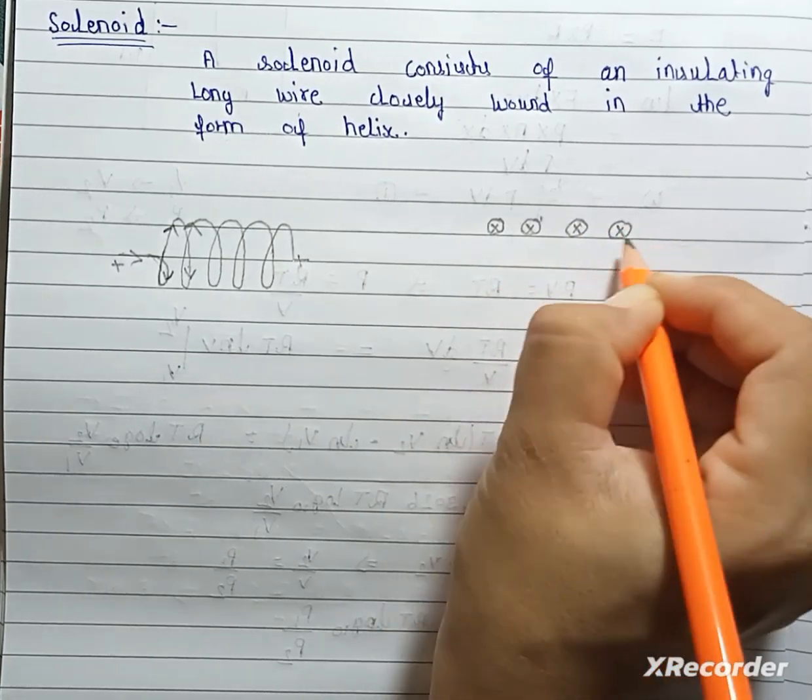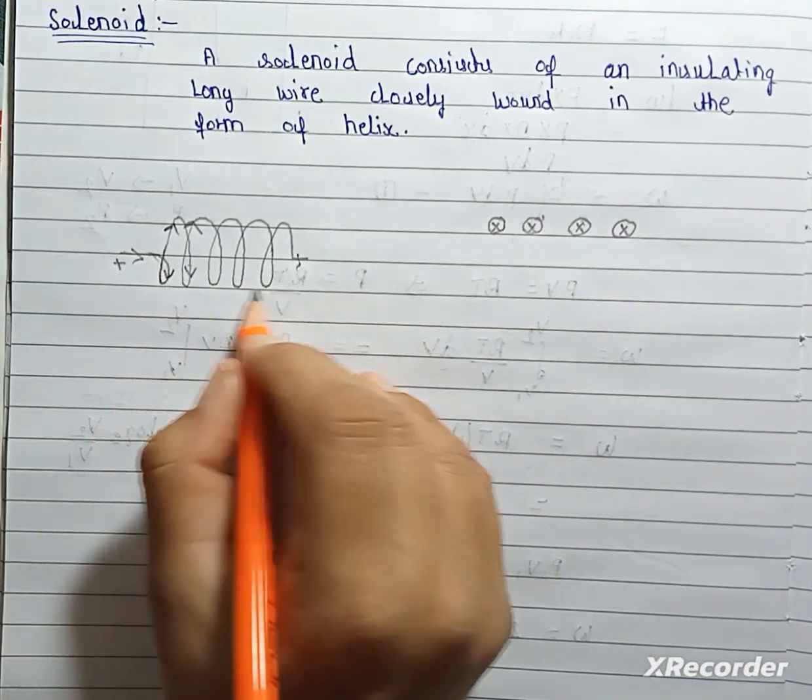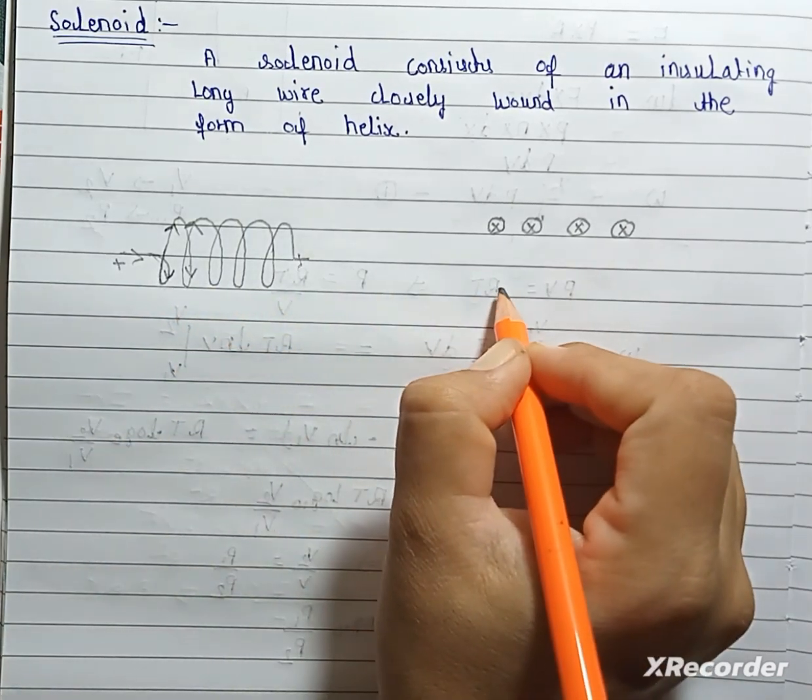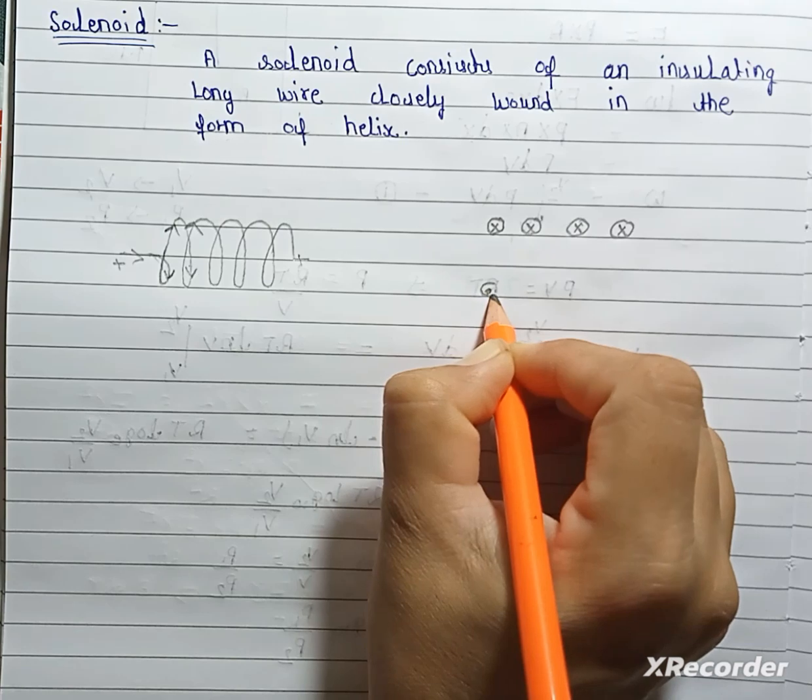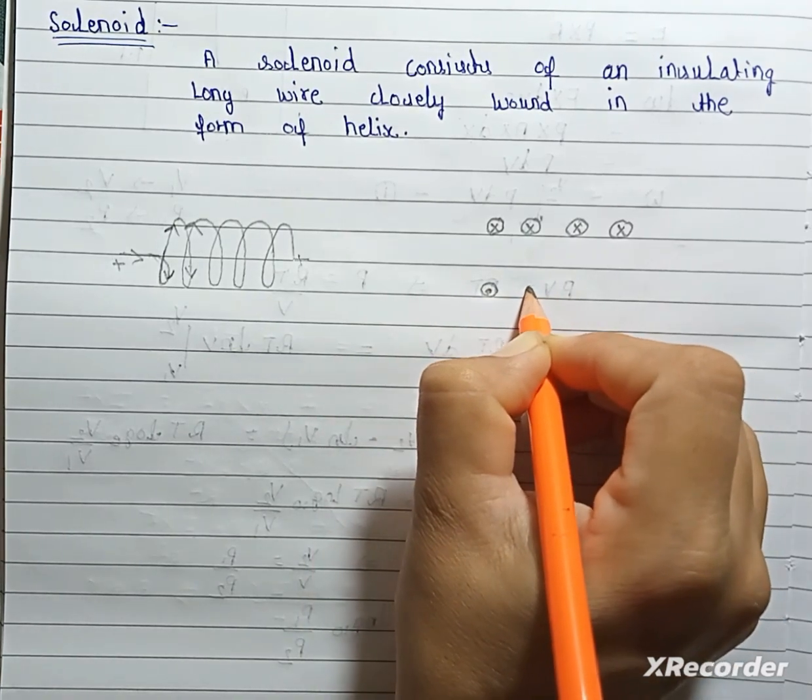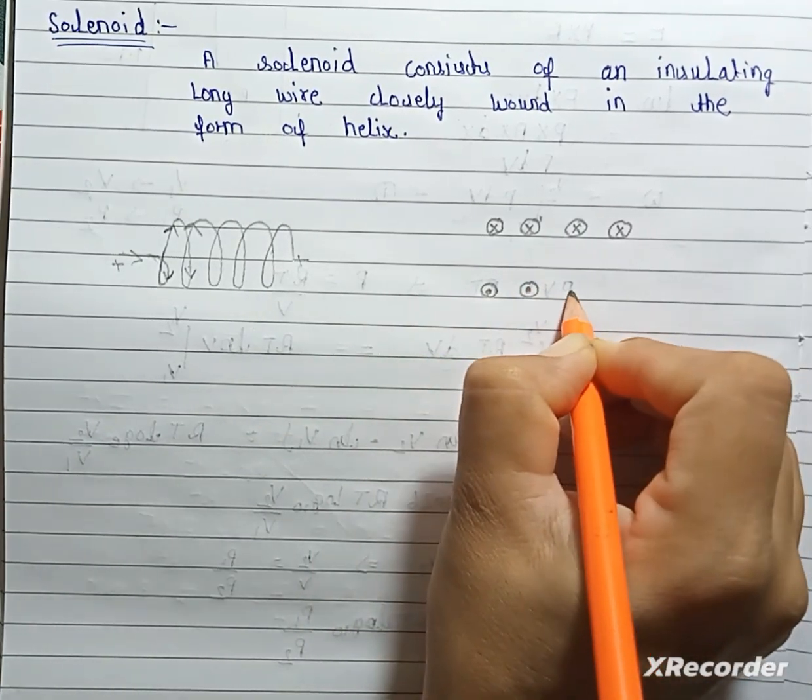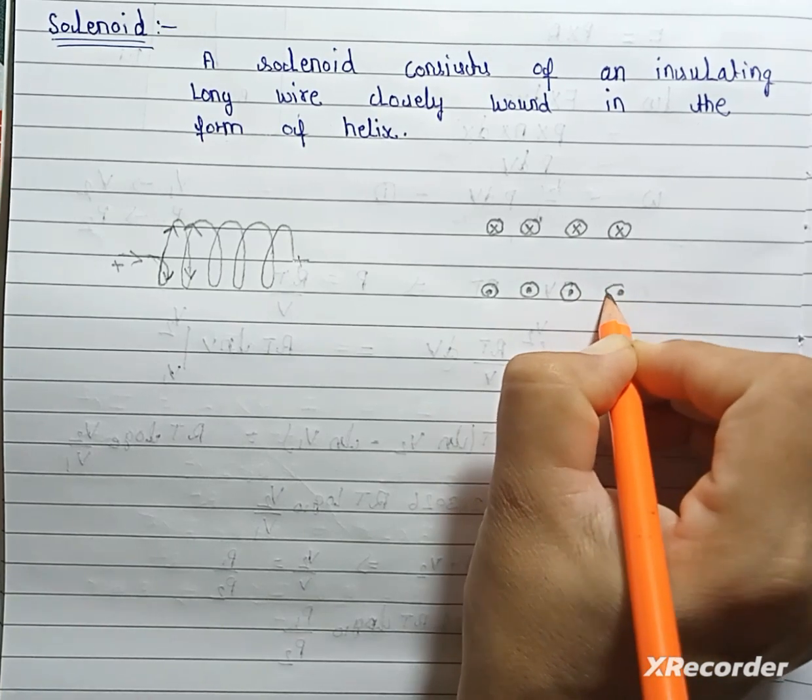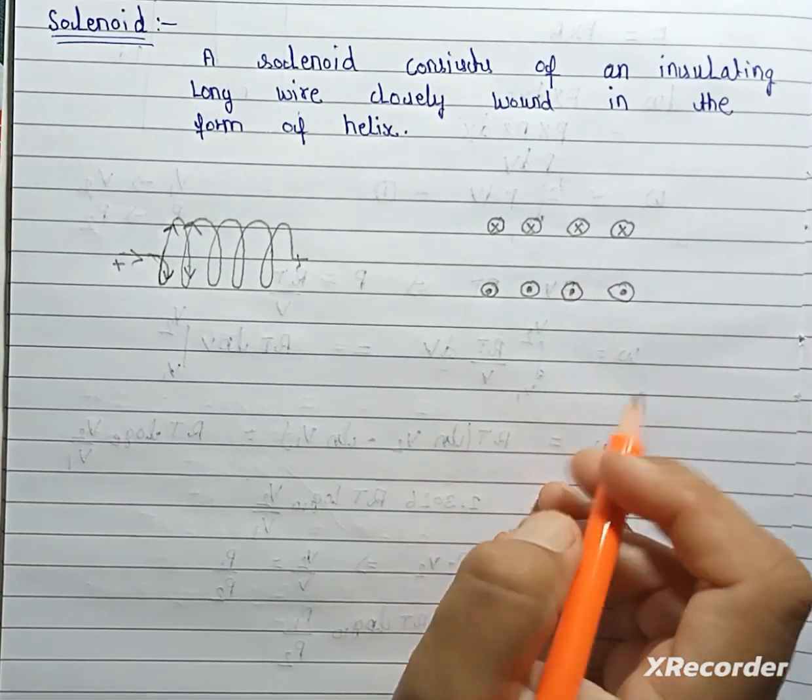And, this is for down below side. Below side is upward direction. So, upward direction represented by this. Don't get confused, this is for current, not magnetic field.